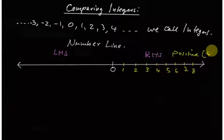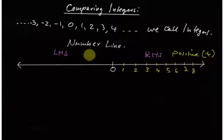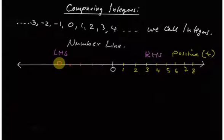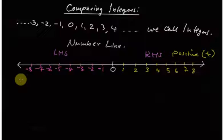The numbers on the right-hand side are positive. We don't put the positive sign behind them because when we leave them as they are, it means they are positive. On the left-hand side, I put marks one centimeter apart, just the same way I did on the right-hand side. So we put: this is negative one, this is negative two, negative three, negative four.